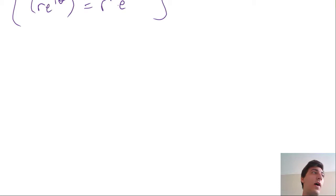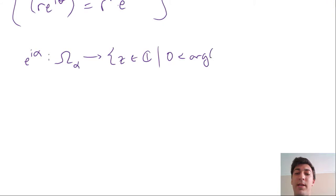So how would we do that? In order to rotate, we know to use the map e to i alpha. In this case, that will be a rotation by alpha. That will take conformally, because a rotation is a conformal map, this omega alpha region to some region where the argument is changed. Now these boundaries of this region are going to be a little more friendly to us.